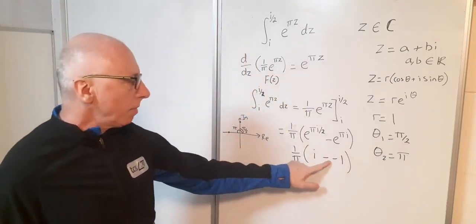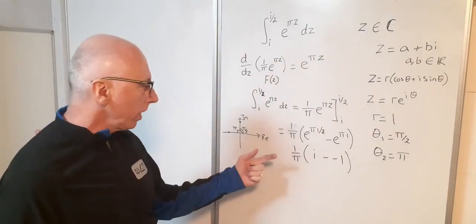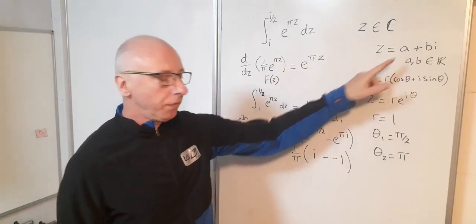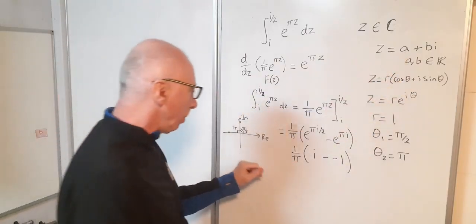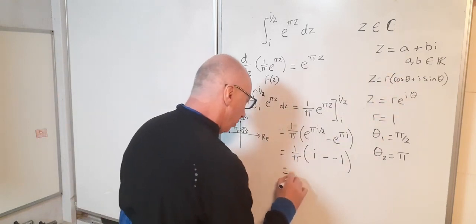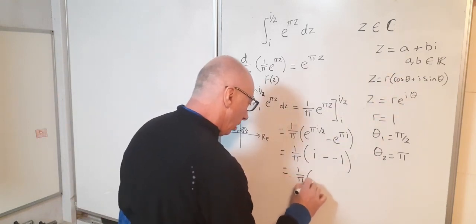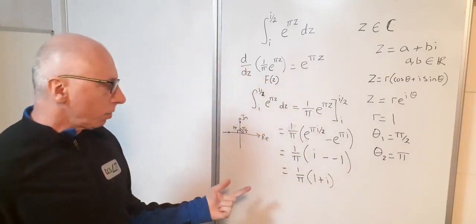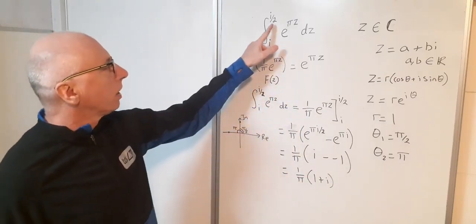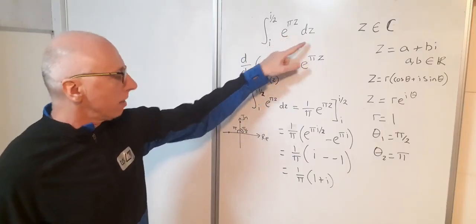Well i minus minus 1 is just 1 plus i if we do it with the real part first, and times that by 1 over pi. So that equals 1 over pi times 1 plus i, and that would be the result of my integration from i to i over 2 of e to the pi z dz.